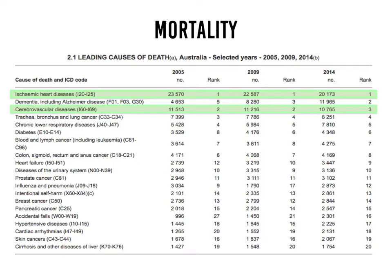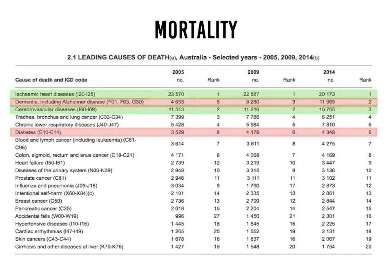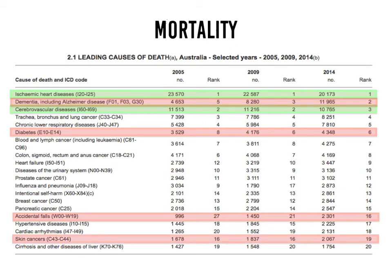The number of people dying from ischemic heart disease has actually fallen. Cerebrovascular disease, which refers to stroke, has also seen falling deaths. On the other hand, dementia including Alzheimer's disease has increased dramatically between 2005 and 2014, as has diabetes and accidental falls. The increases in dementia and accidental falls could be linked to the ageing population. Skin cancers, chronic lower respiratory disease, and diabetes have also shown increases.